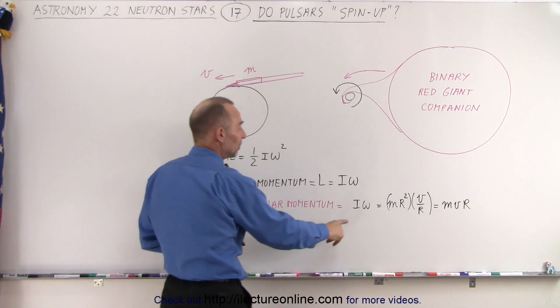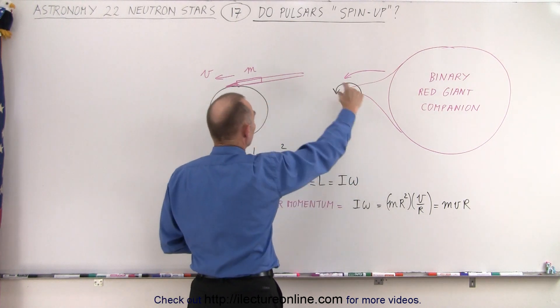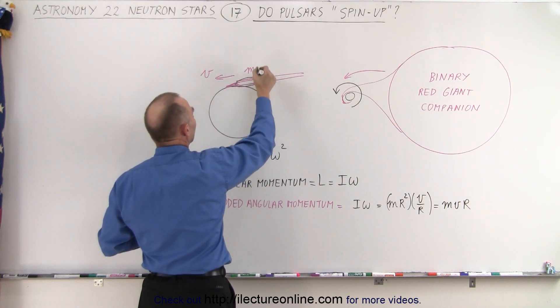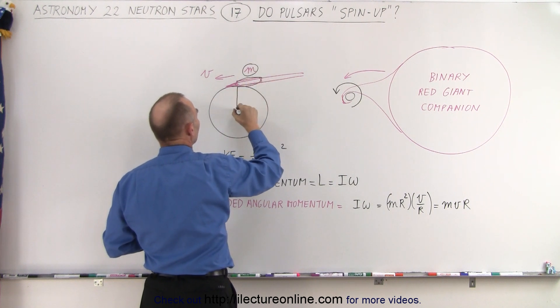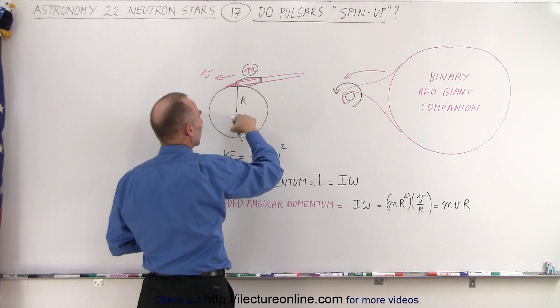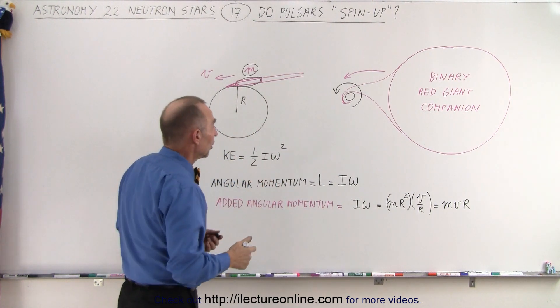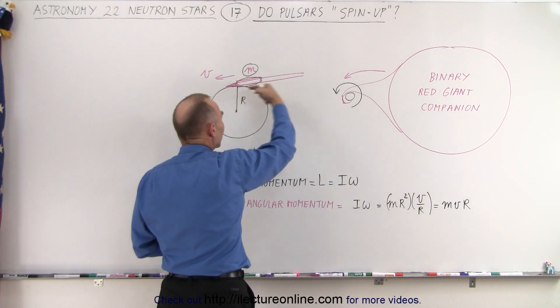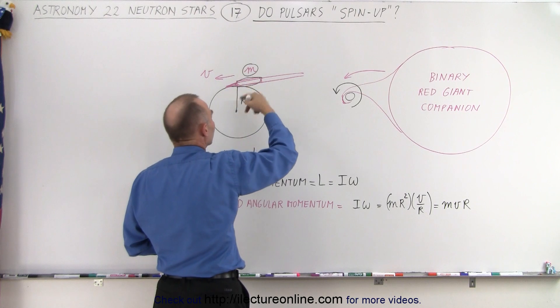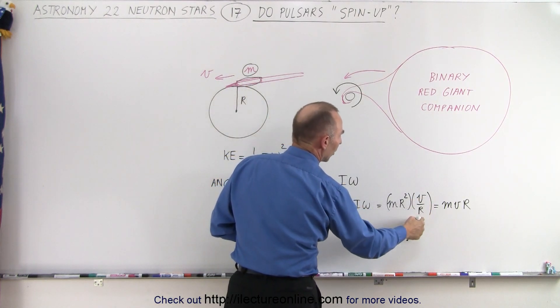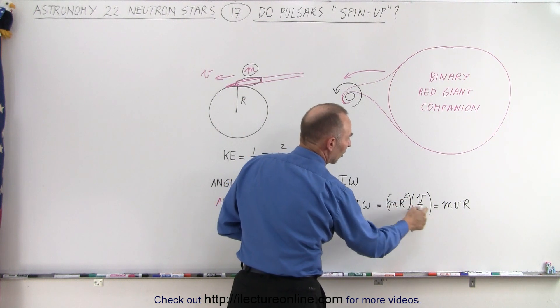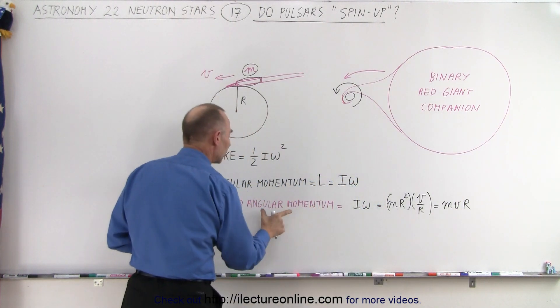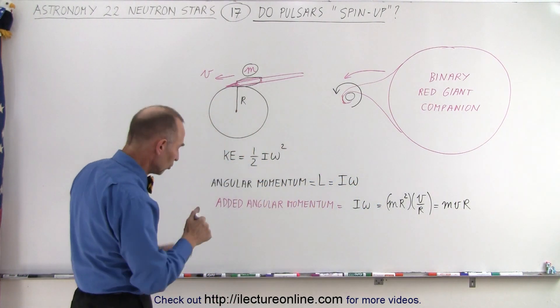Well, the added angular momentum would also be I times omega and the moment of inertia of the material that is deposited onto the surface. Let's say that an amount of material M is deposited onto the surface at a distance r away from the center of the neutron star, which of course is the radius of the neutron star. We can then say we multiply the mass times the radius squared, that's the angular momentum of the material that's deposited every single second, and we multiply that times v over r. Of course one of the r's cancels out with one of these r's, so essentially we multiply the mass times the velocity times the radius, and that's the added angular momentum onto the neutron star.